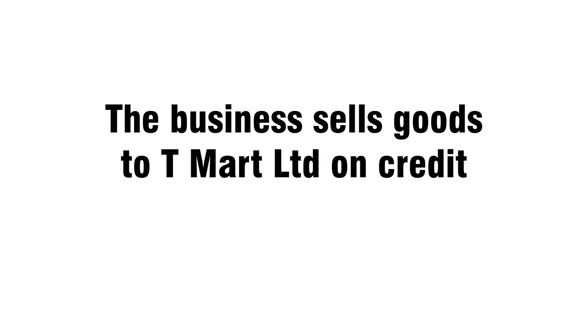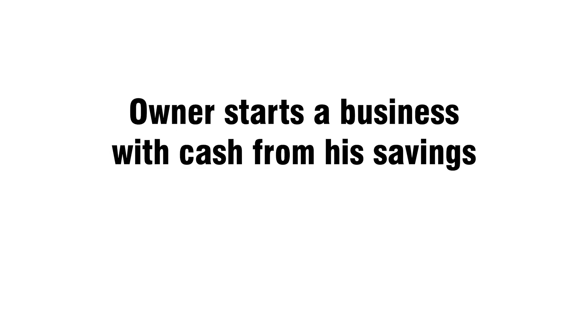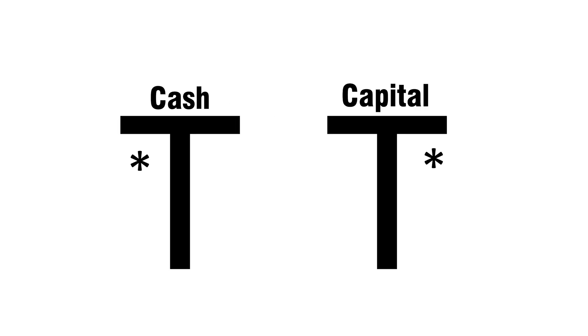The business sells goods to T Mart Limited on credit: debit debtor T Mart Limited, credit sales. Now test yourself. Owner starts a business with cash from his savings: debit cash, credit capital.